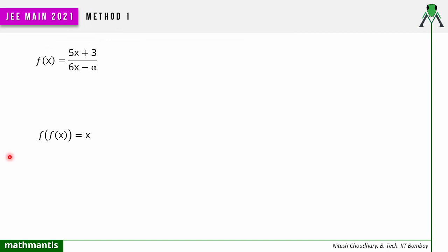Let's discuss Method 1. I will use the identity that f(f(x)) = x. What I will do is put some input value equal to 0. So I will set f(x) = 0. Since f(f(x)) = x is true for any value of x, the first method involves finding a value of x for which the input here — which is f(x) — equals 0.